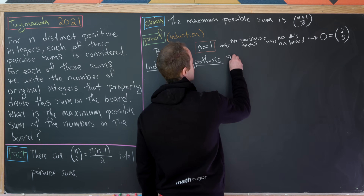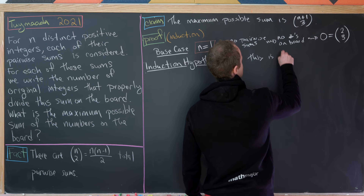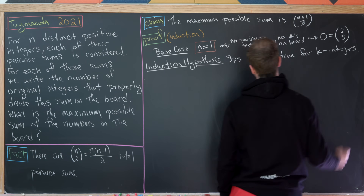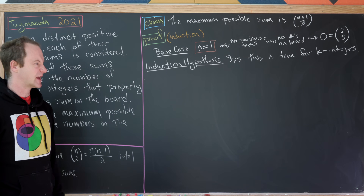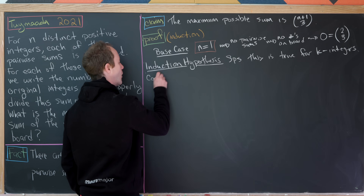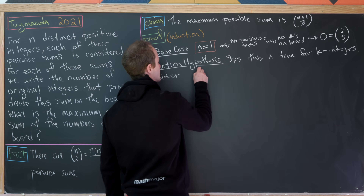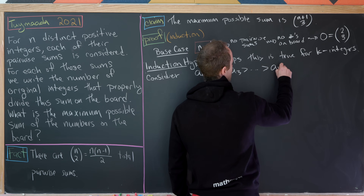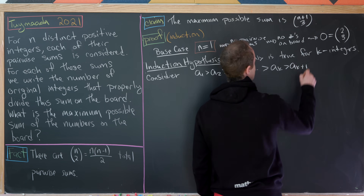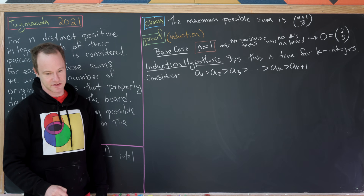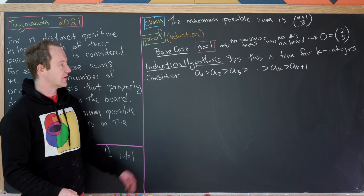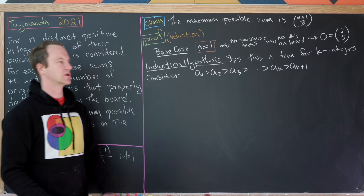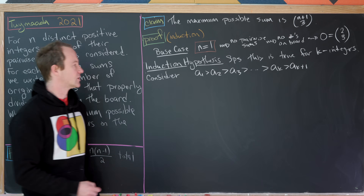For the induction hypothesis, suppose the result holds for k positive integers. Now consider a list of k+1 integers ordered as a₁ > a₂ > ... > aₖ > aₖ₊₁, so a₁ is the largest and aₖ₊₁ is the smallest.